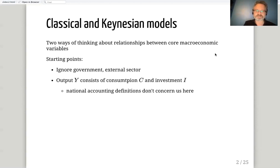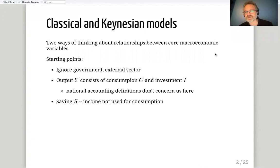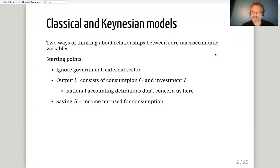We have savings, represented by the letter S. As a convention, capital letters are typically economy-wide aggregates — total output, total consumption, total investment, total savings — while a lowercase equivalent, like lowercase s, is typically a rate or ratio. For instance, capital S is total savings and lowercase s is the aggregate savings rate. Savings is defined as whatever part of income is not used for consumption.